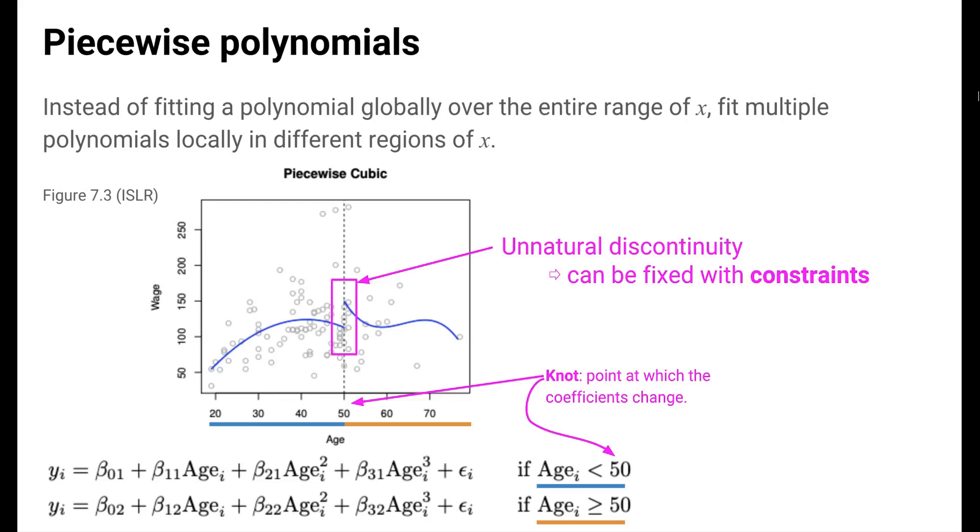A problem that we can immediately notice, though, is that the function looks unnatural. There's a discontinuity, a jump, at the knot that's probably not a great model for how wage actually varies with age in real life. These discontinuities make piecewise polynomials undesirable for modeling.